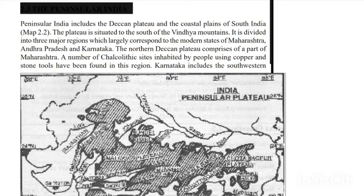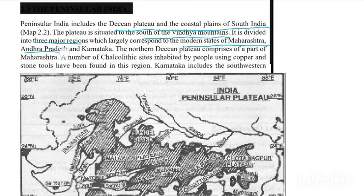Students, next we can look at Peninsular India. Peninsular India includes the Deccan Plateau and the coastal plains of South India. The Plateau is situated to the south of the Vindhya Mountains. It is divided into three major regions which include the modern states of Maharashtra, Andhra Pradesh and Karnataka.